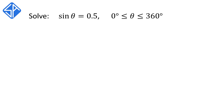Our first example, we're going to solve sine theta is equal to 0.5, with theta between 0 and 360 degrees. We're going to break this up into three steps.